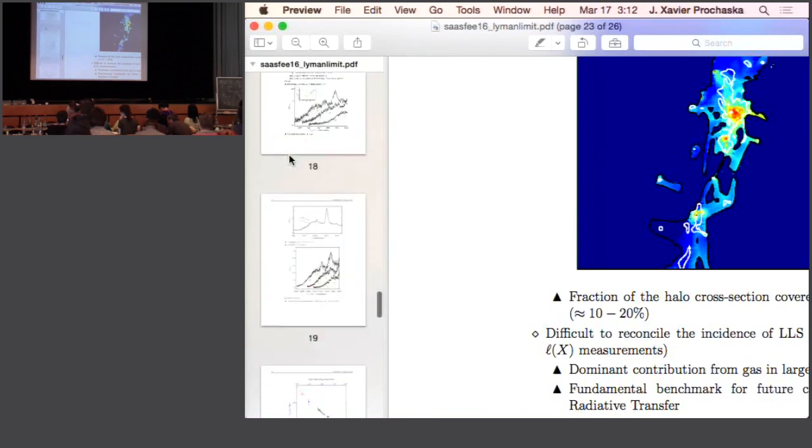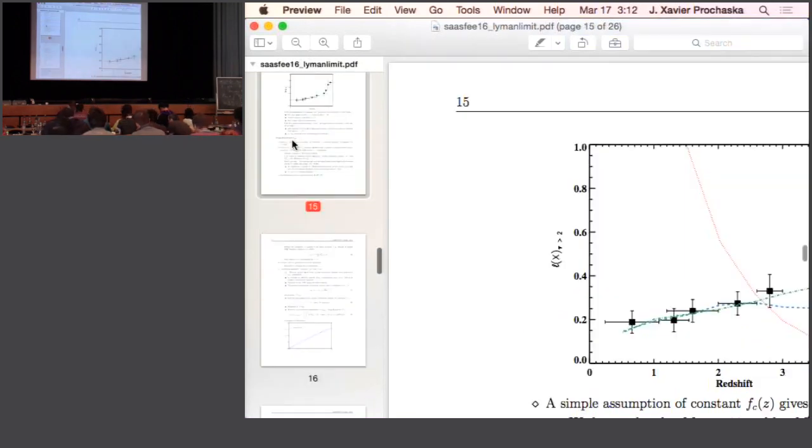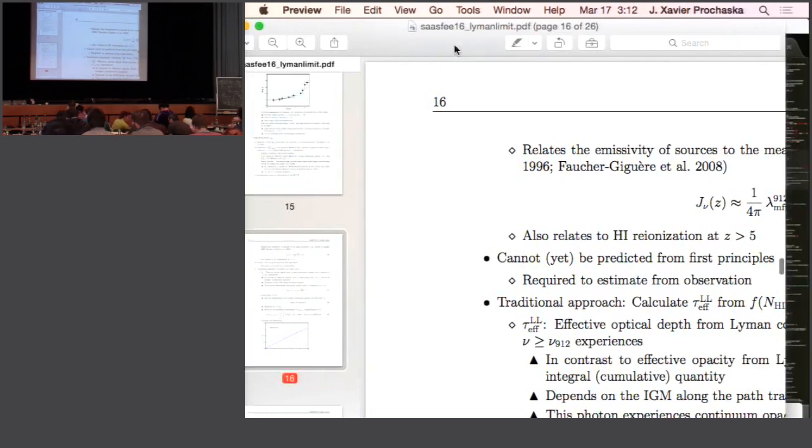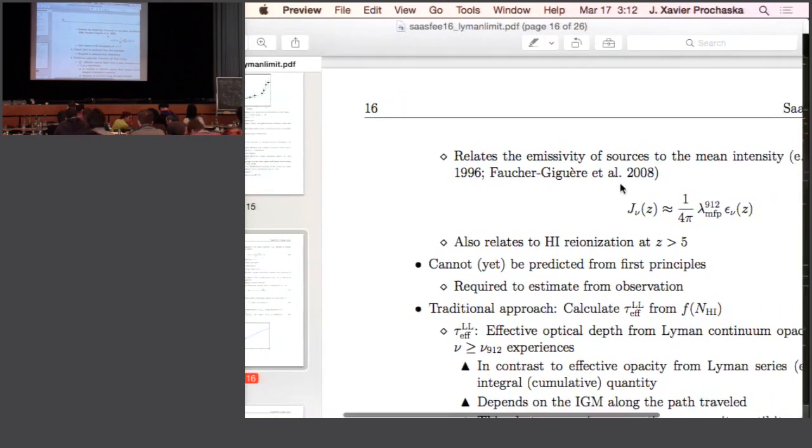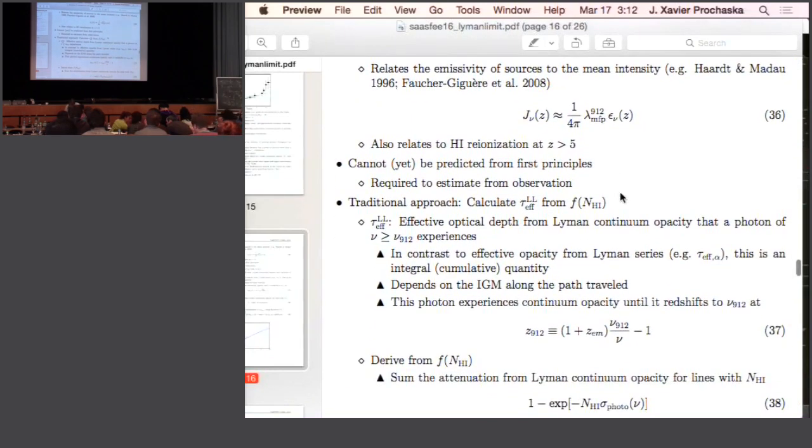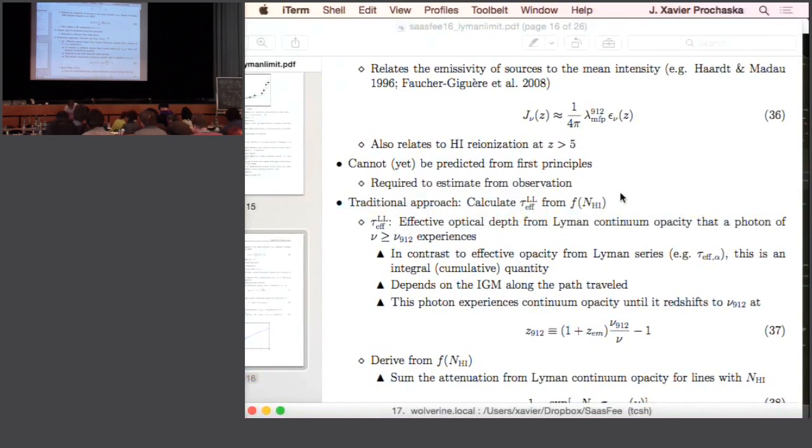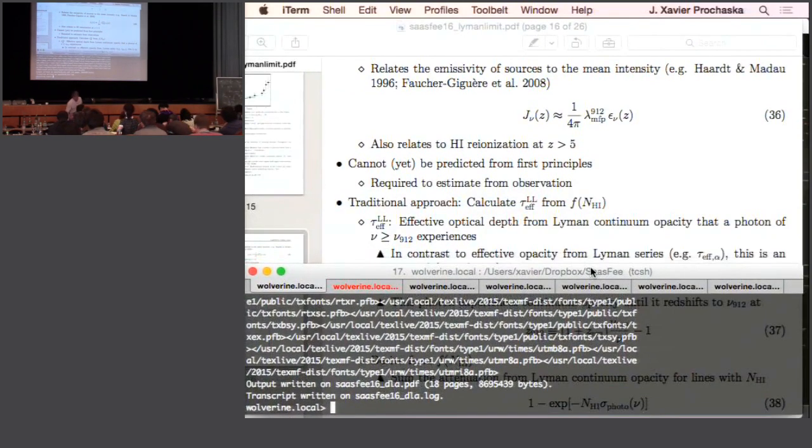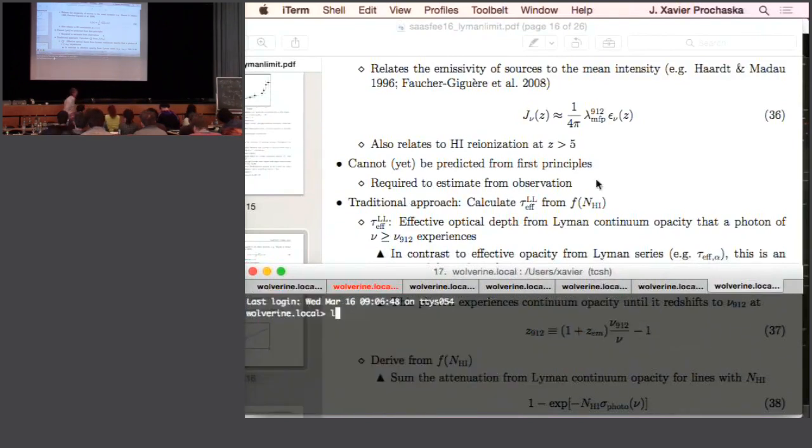Picking up with the mean free path, which is the measure of attenuation of ionizing photons by the intergalactic medium, cosmologically it's important. One of its great importance is summarized in equation 36, which shows the relationship between the mean intensity radiation field of the UV background with the emissivity epsilon of ionizing sources in the universe—quasars, galaxies, and the like. It's modulated by this quantity of the mean free path. It can't really be predicted from first principles in cosmological simulations of the IGM, so one requires estimates from the data to evaluate something like equation 36.